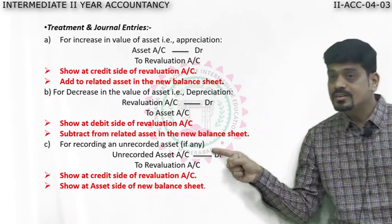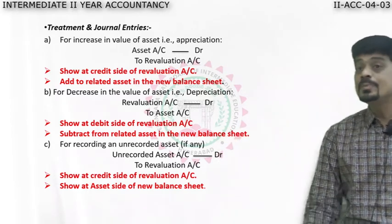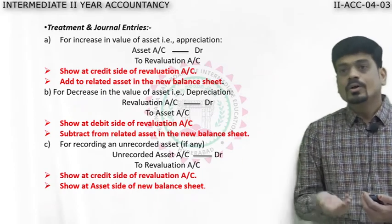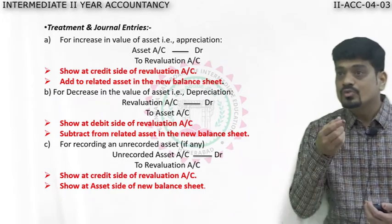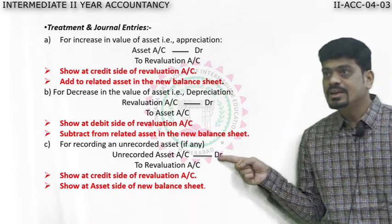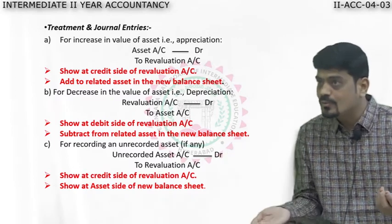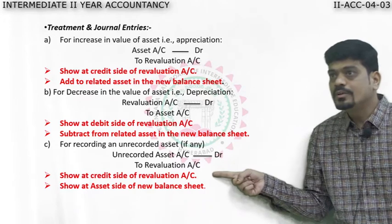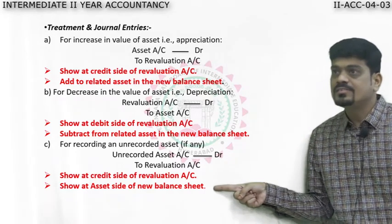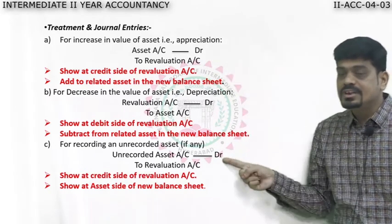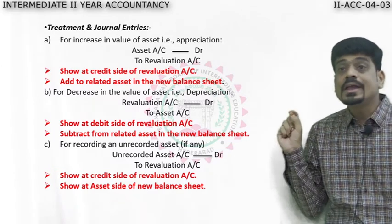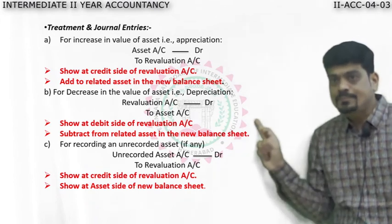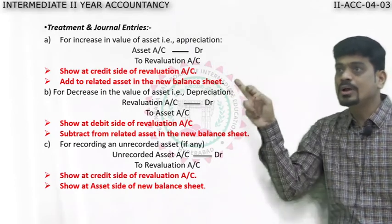These revaluation entries are 80% of your solution. There are six entries in total — three for assets and three for liabilities. For assets: appreciation means add to asset and show on revaluation account credit side. Decrease means show on revaluation account debit side and subtract from asset. Unrecorded asset — show on credit side of revaluation account and on asset side of the balance sheet. Please note all these effects carefully, as they will guide you to solve the problem systematically.